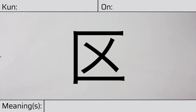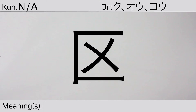Welcome to this lesson on Japanese kanji. Today, we'll be discussing this character. This kanji has no kunyomi, and it has onyomi of ku, ou, or kou. This character means ward or district.